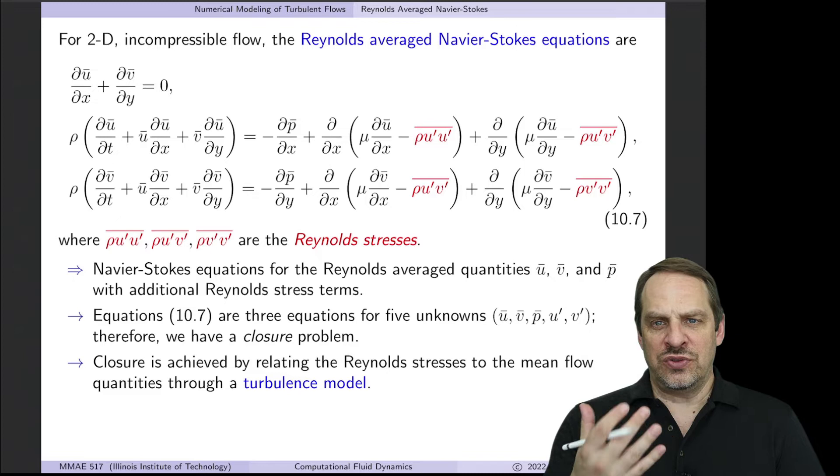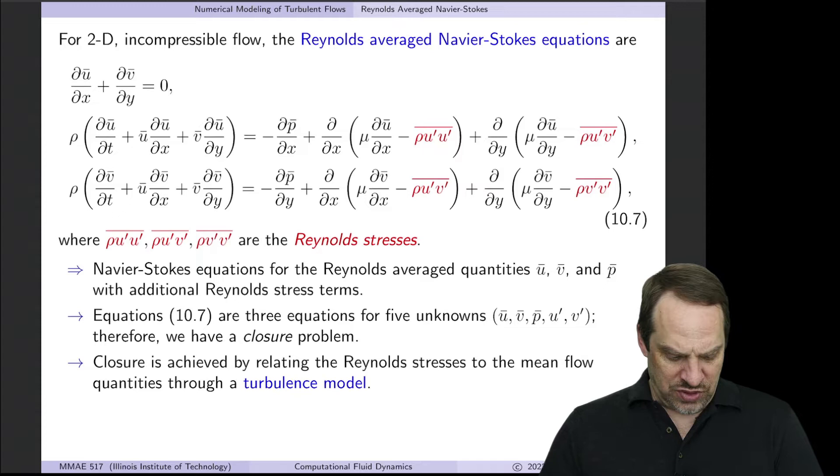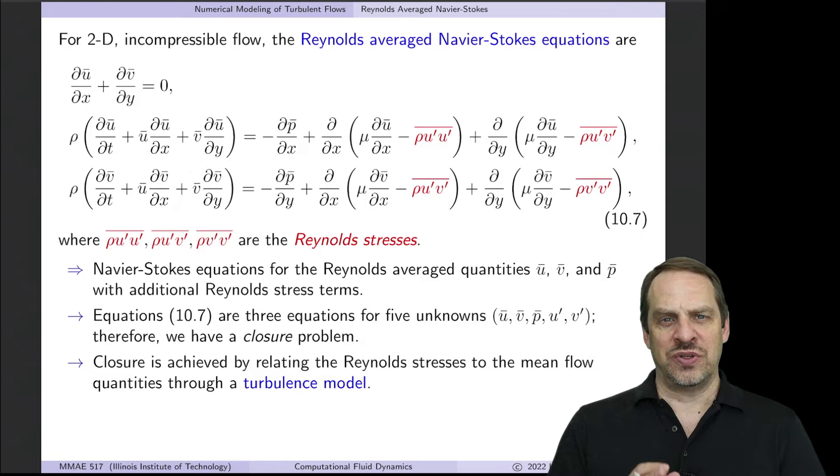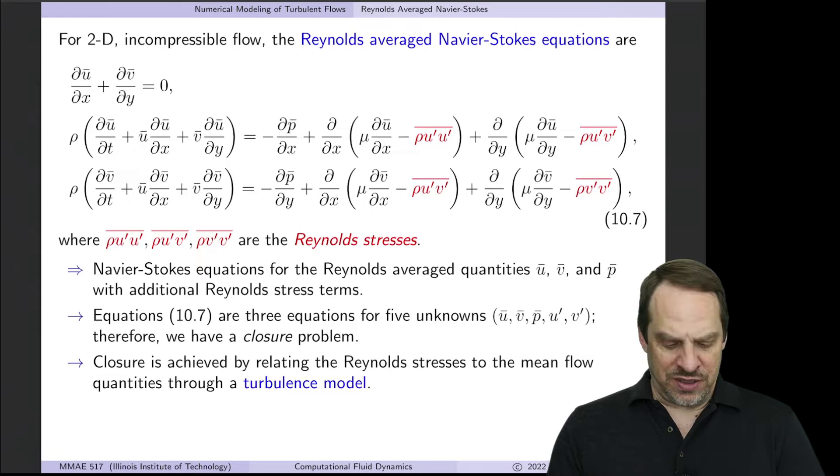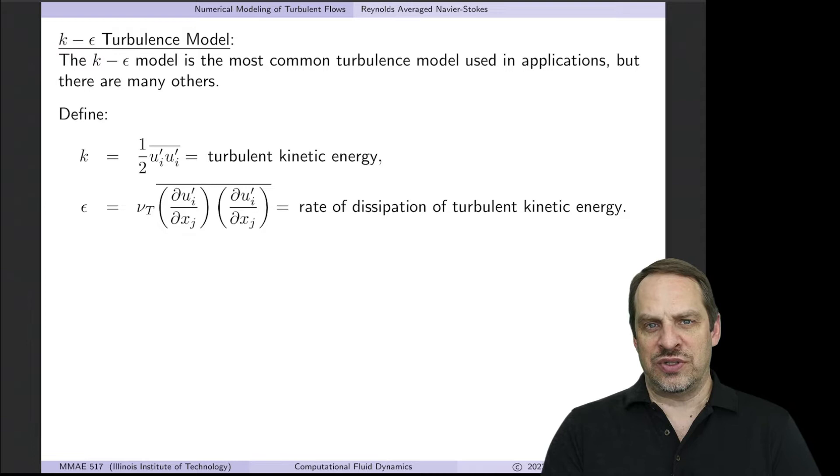In order to close the problem mathematically, we need two additional equations for the five unknowns. That's where the turbulence model comes in. People are still developing and arguing about which turbulence models are best in particular circumstances. The turbulence model provides this closure mathematically.